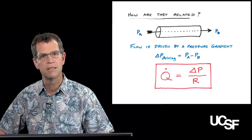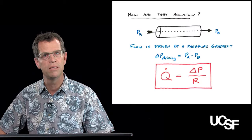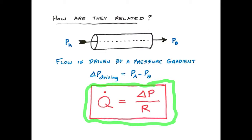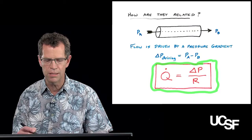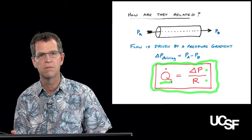In any plumbing system or part of the cardiovascular system, a pressure gradient is what drives blood flow. If you have higher pressure in one place and lower pressure at the other end of a blood vessel, there will be flow down the pressure gradient — called delta P or driving pressure. The flow rate through any blood vessel or heart valve is determined by the pressure gradient delta P divided by the resistance. Anything that changes the pressure gradient or resistance changes the flow rate.